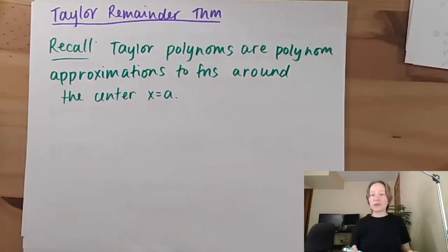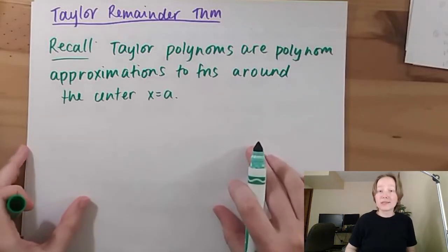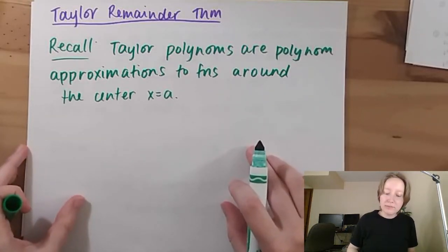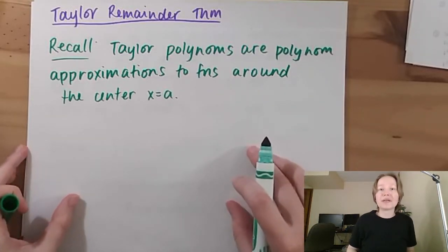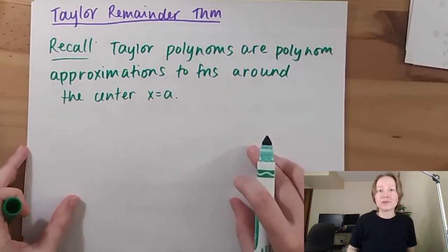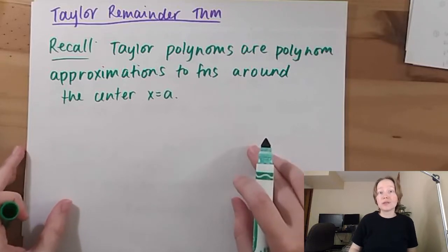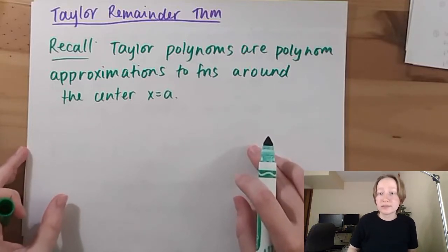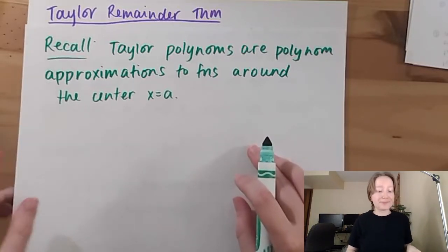And because they are approximations, they must have error. So the Taylor Remainder theorem gives me a bound on that error, just as we did with the alternating series.